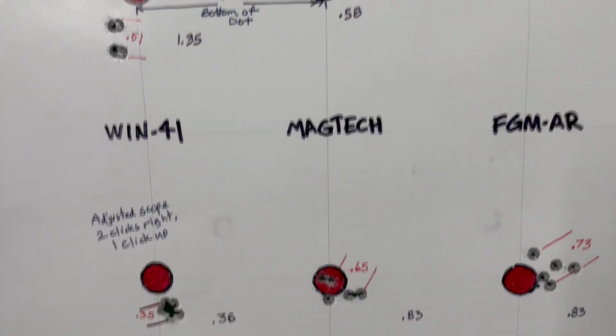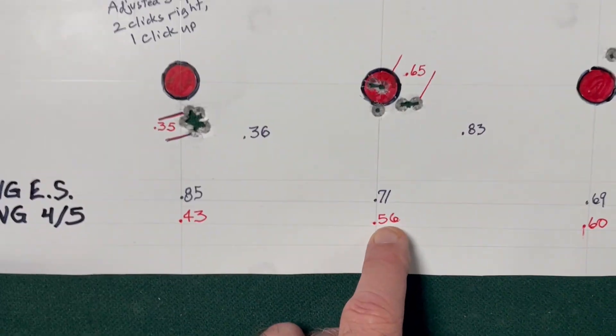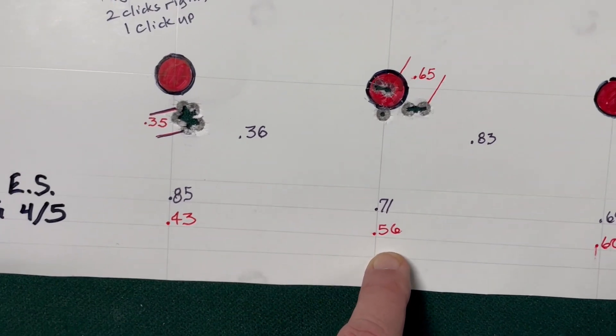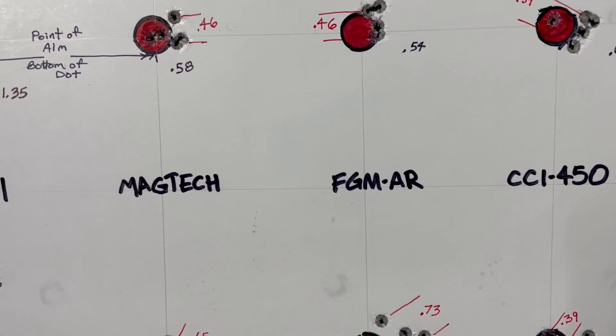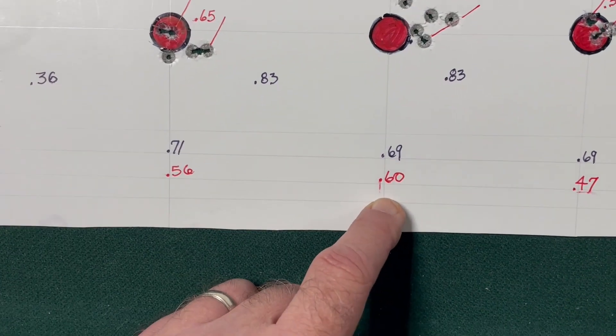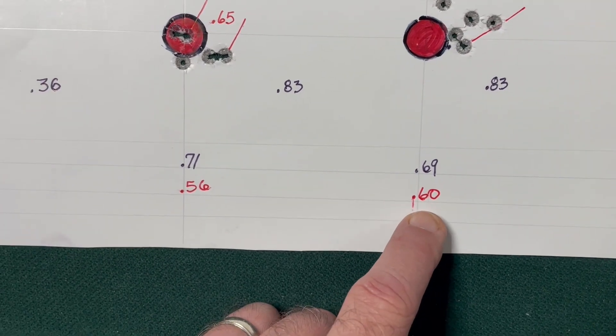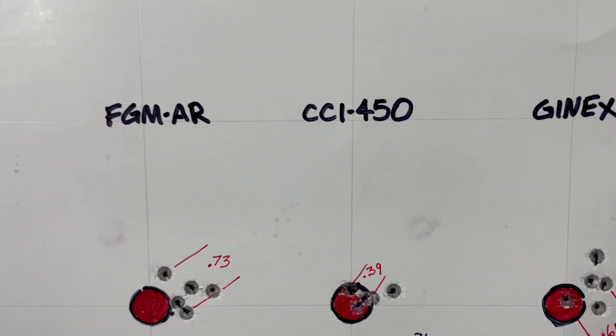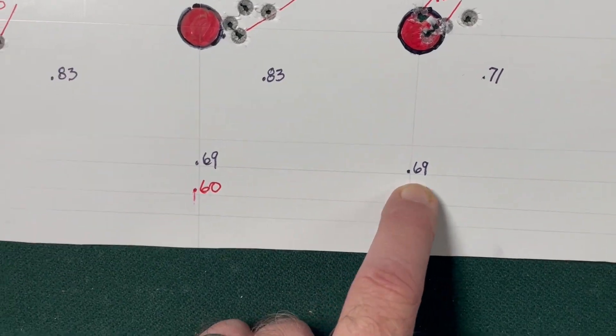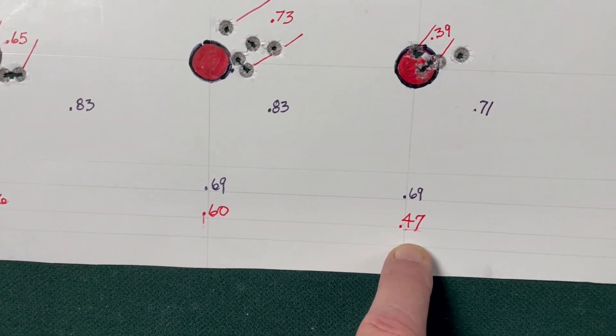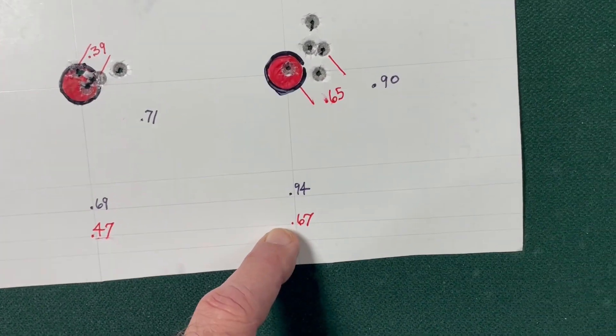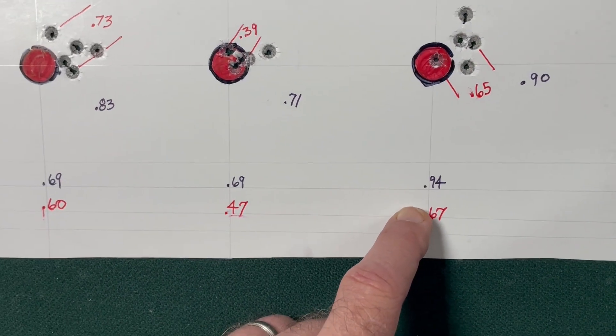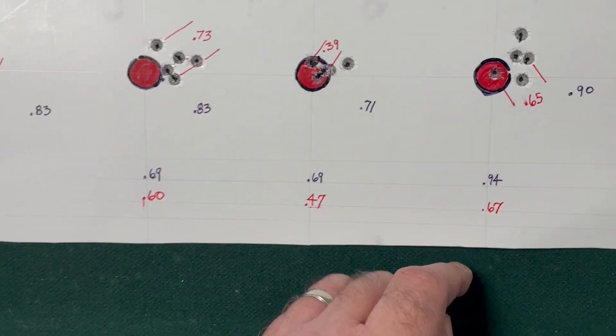The MagTech extreme spread was .71 with a best four out of five at .56. Federal gold medal AR match primers averaged an extreme spread of .69 and the best four out of five at .60. The CCI 450 averaged .69 on the extreme spread and .47 best four out of five. And then Gen X had an extreme spread average of .94 and a best four out of five at .67.